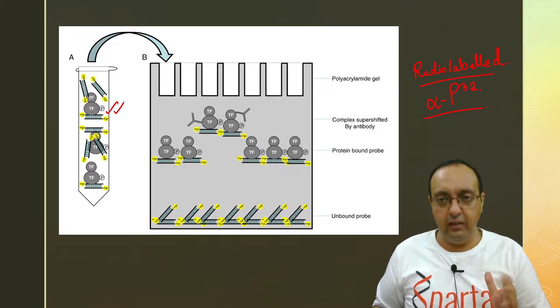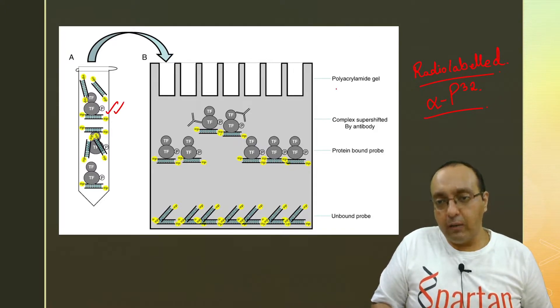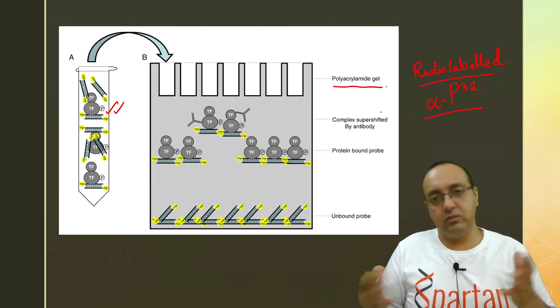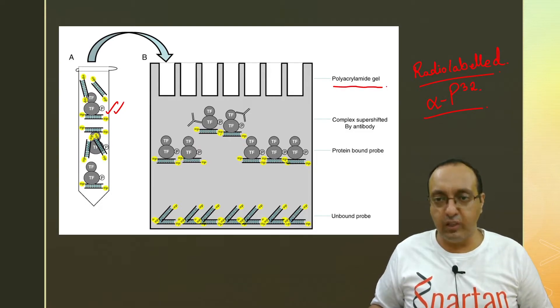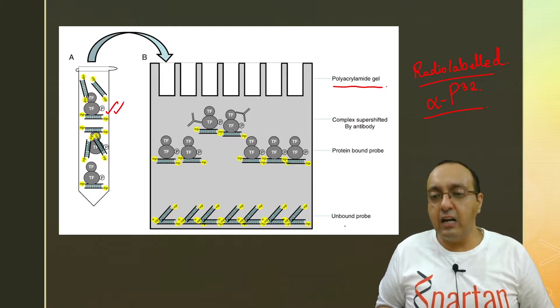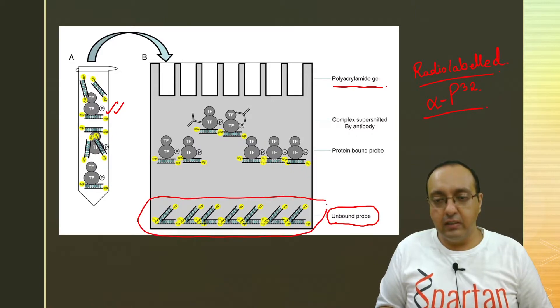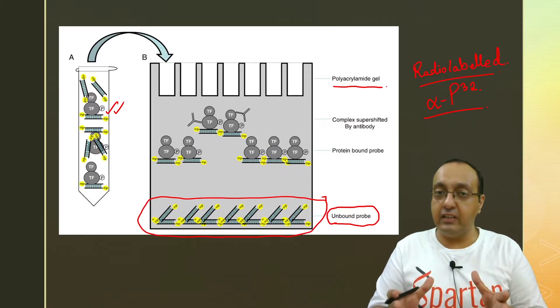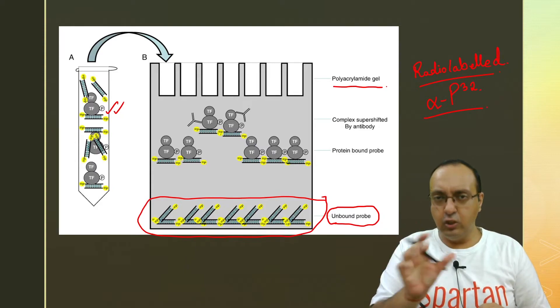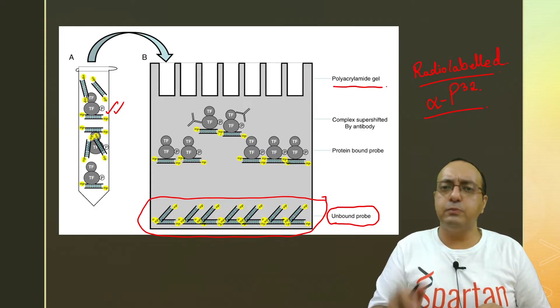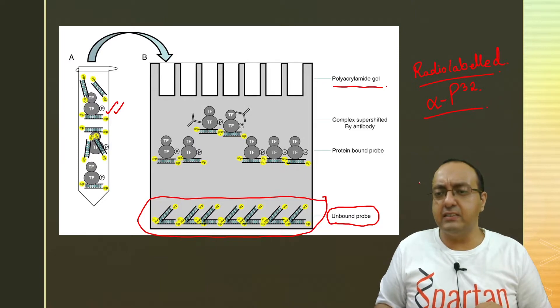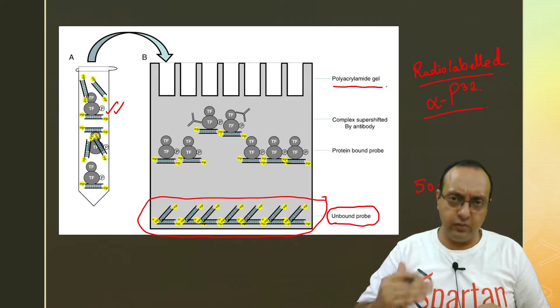So you want native PAGE gel. You have a polyacrylamide gel, because those are used for separation of proteins and the unbound probe, which is highly radioactive. It will basically settle at the bottom because it has the highest mobility. It is the shortest size. Usually the size of this probe, this DNA fragment is somewhere between 50 and 200 base pairs. So it runs to the bottom of the gel.